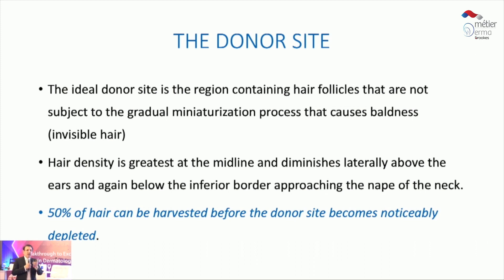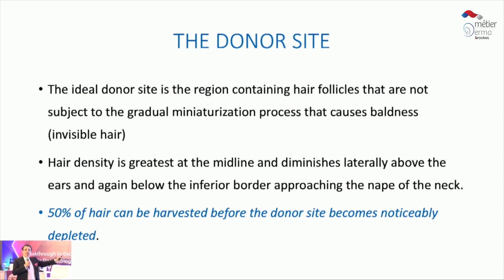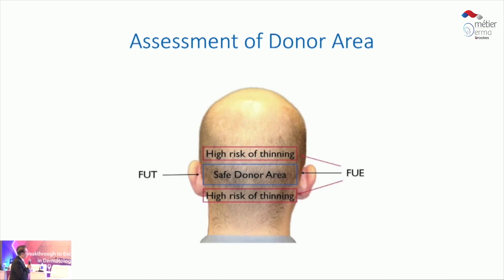When we are doing FUE it is cherry-picking — you are technically picking all the threes, fours, and twos and leaving behind the ones. So that figure of 50% harvest does not hold true for FUE; it should be at most 25%, not more than that.